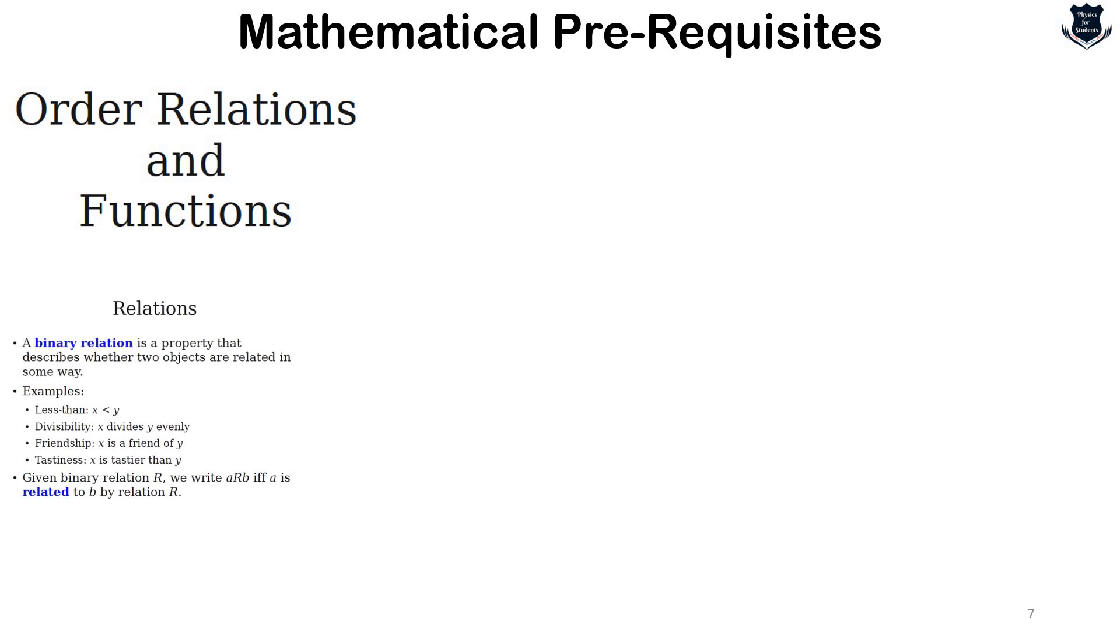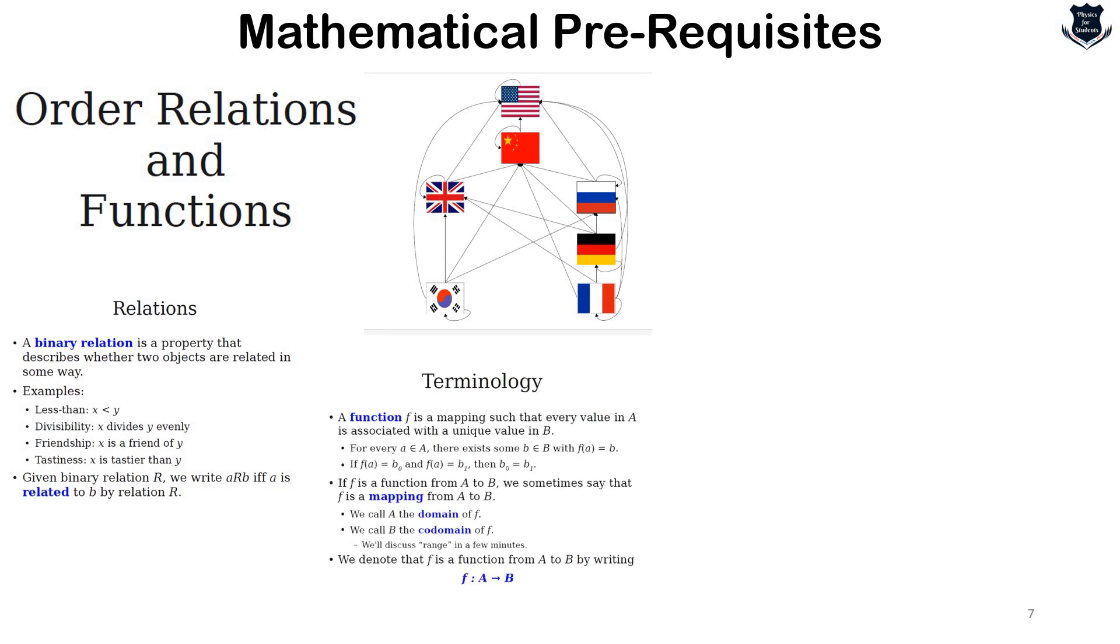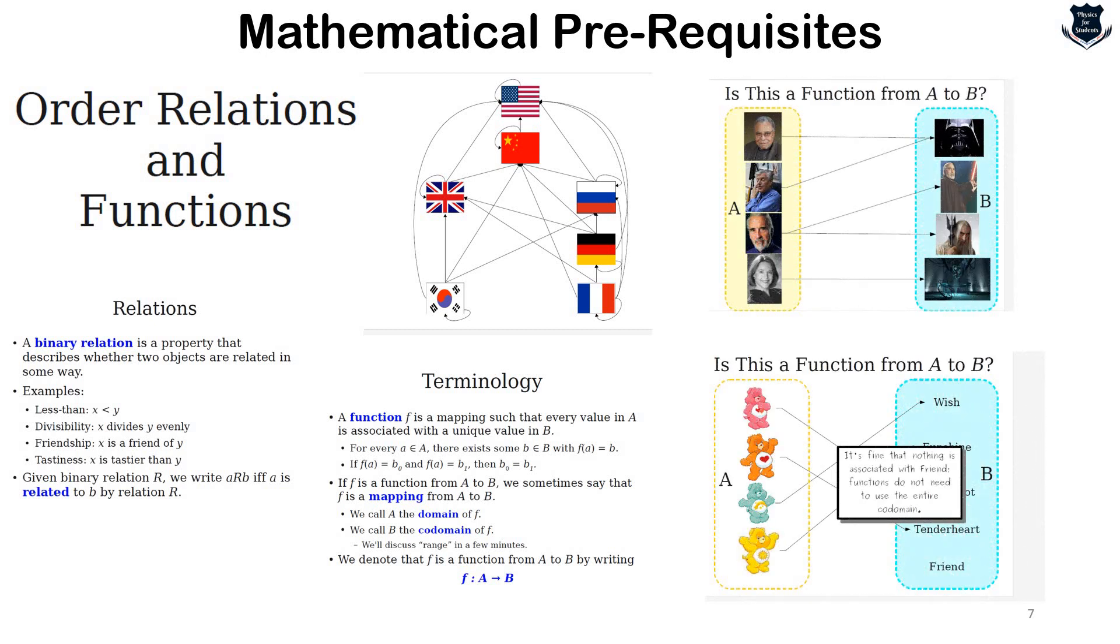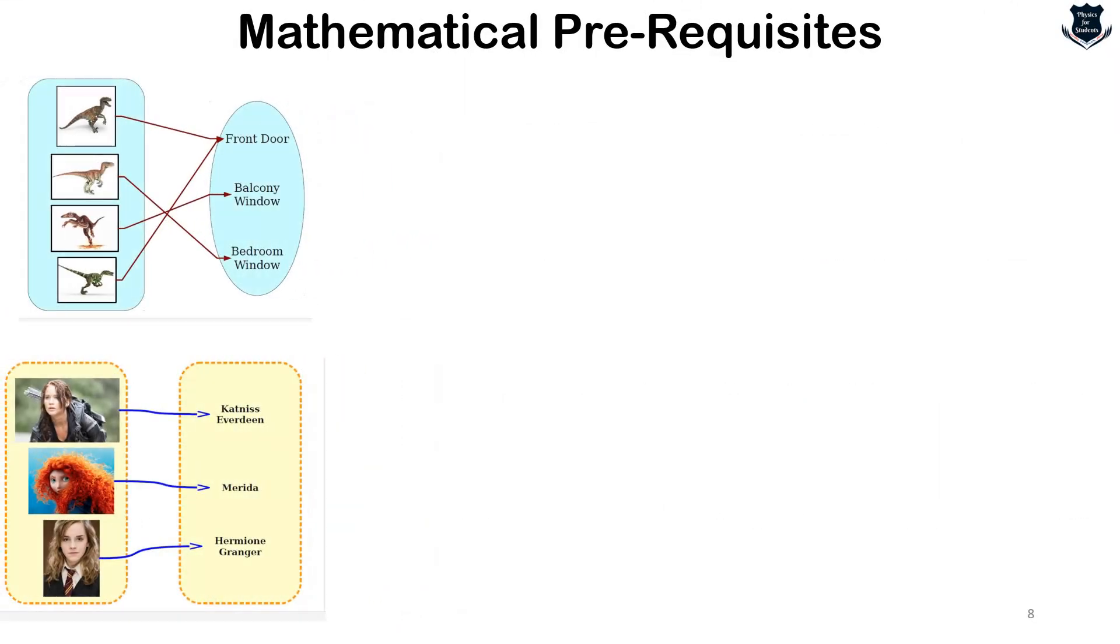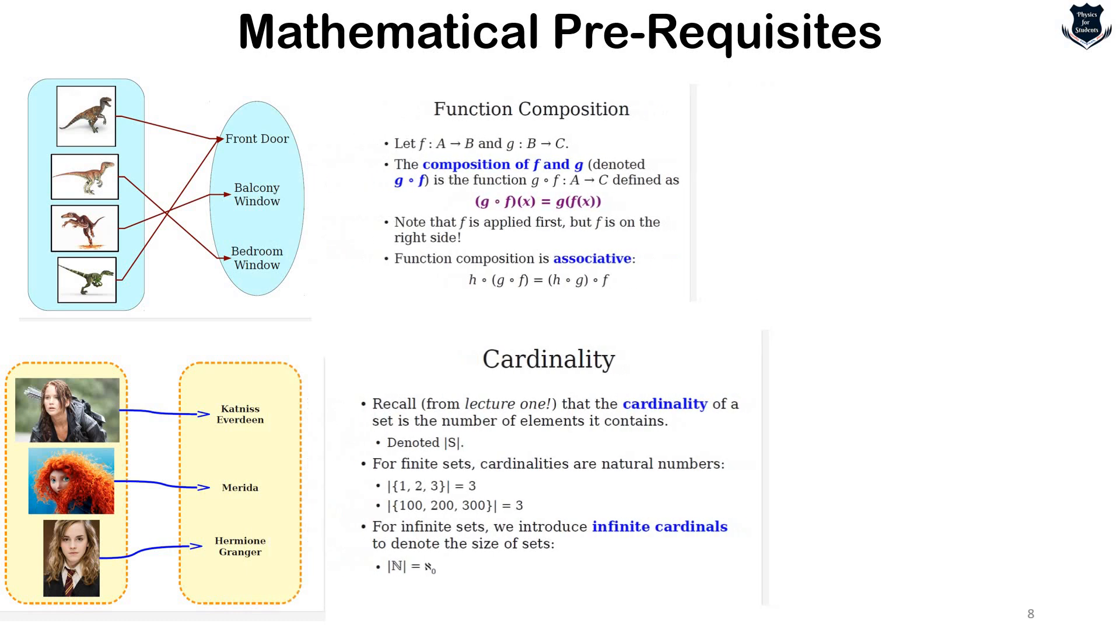You see this is basically I have gathered from internet. It talks about relations, binary relations and gives example. Here you can see these are nice examples using flags to determine the relation. Then comes the terminology, what is function, domain and co-domain. And you can see how this function, domain and co-domain has been nicely illustrated using colorful photographs, illustrations, etc. So, this is a nice handout which I think would be very useful to you.